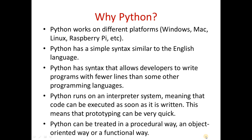Python runs on an interpreter system, meaning that code can be executed as soon as it is written, making prototyping very quick. Python is a highly interpreted, or purely interpreted, language — that's why prototyping is very quick. Another reason is that Python can be treated in a procedural way, an object-oriented way, or a functional way, because Python is a fully object-oriented and interpreted language.